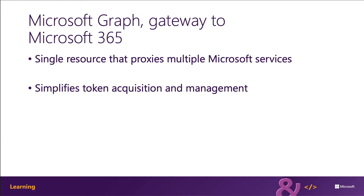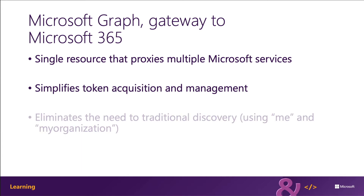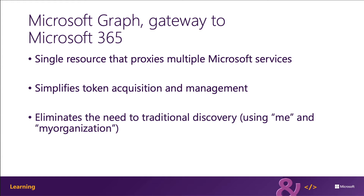Microsoft Graph also enables easy navigation of entities and the relationships between them. While there are many different Microsoft 365 services, such as OneDrive for Business or Outlook for Contacts and Calendars, these different entities are related to each other. These relationships are in the Microsoft Graph, which makes it easy to navigate from one entity to another, even if it's across different underlying endpoints.